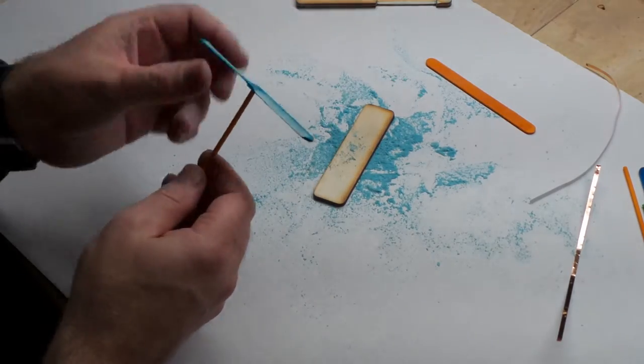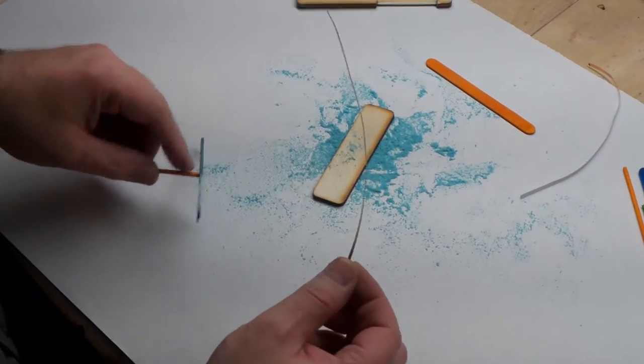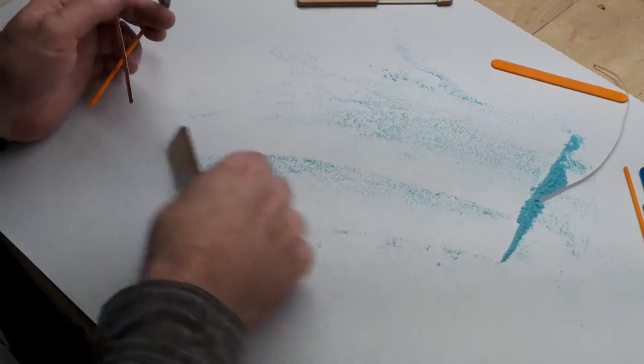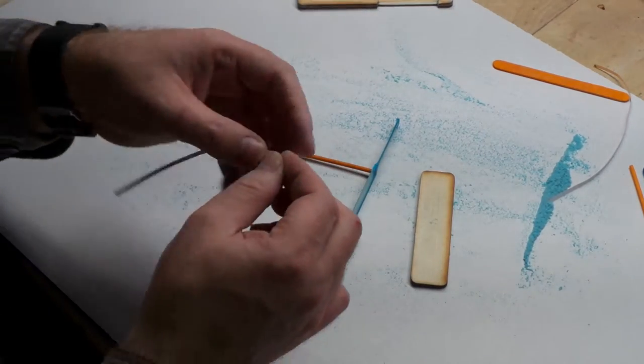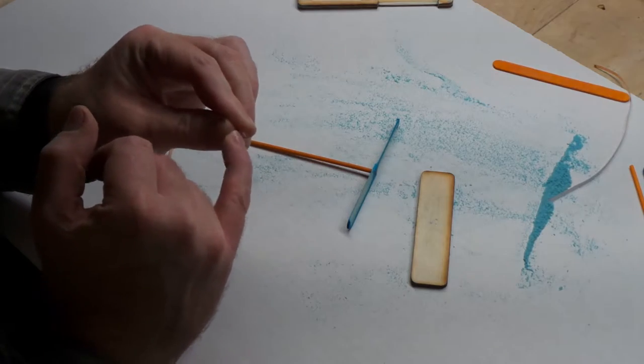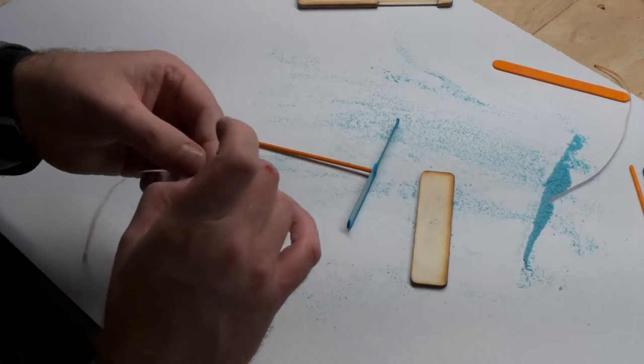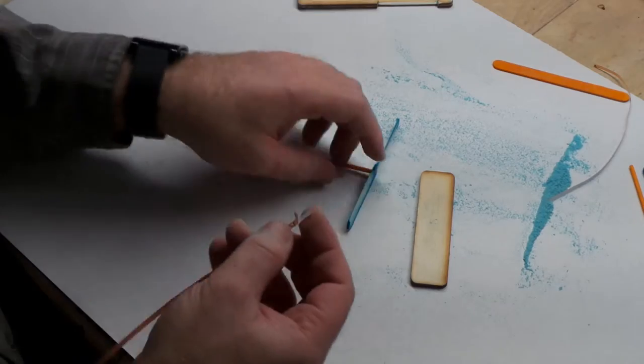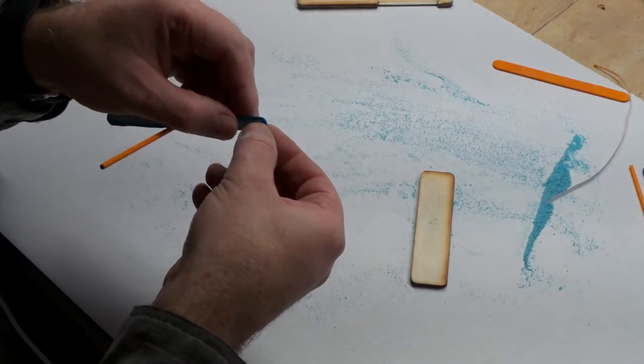All right, the next thing, once you get it flying, the next thing you can do is you can add this copper tape. Now this is kind of fun. Take the tape, put it in your fingers, and flick this back and forth until it separates. Once it separates, take this here and go around.